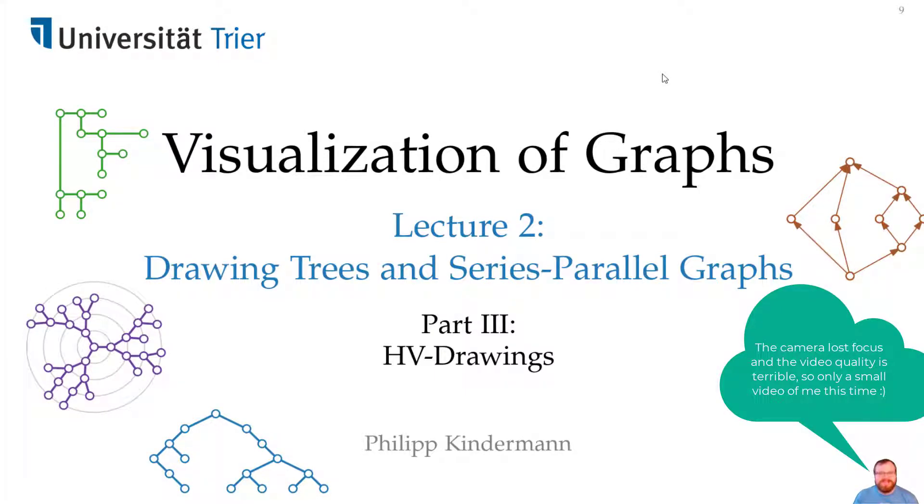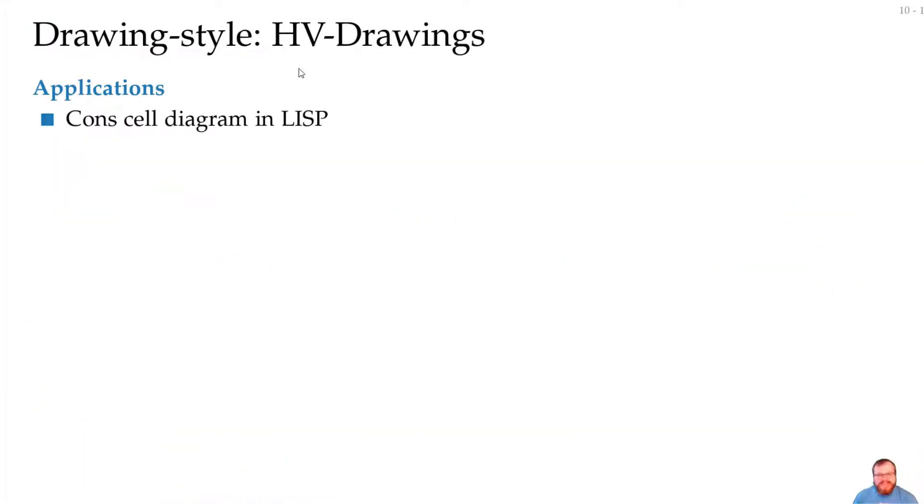In this part, we will develop an algorithm to get so-called HV drawings of trees, which are drawings like this one up here. First, why would we want to have such drawings? For example, you can use them for so-called cons cell diagrams in Lisp.